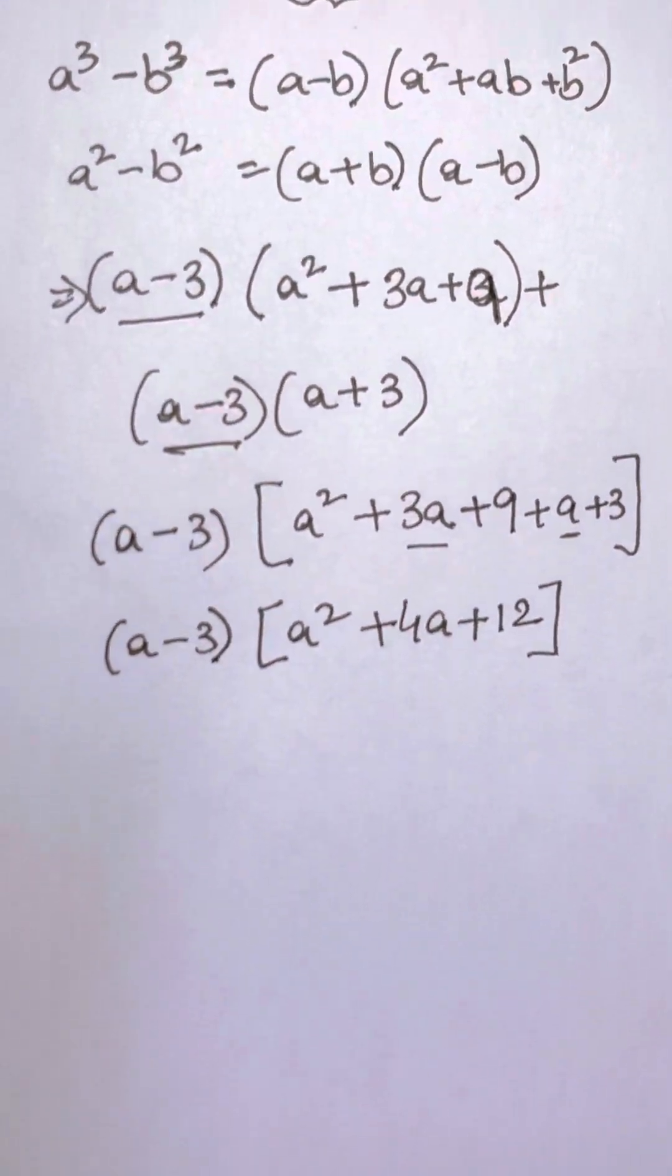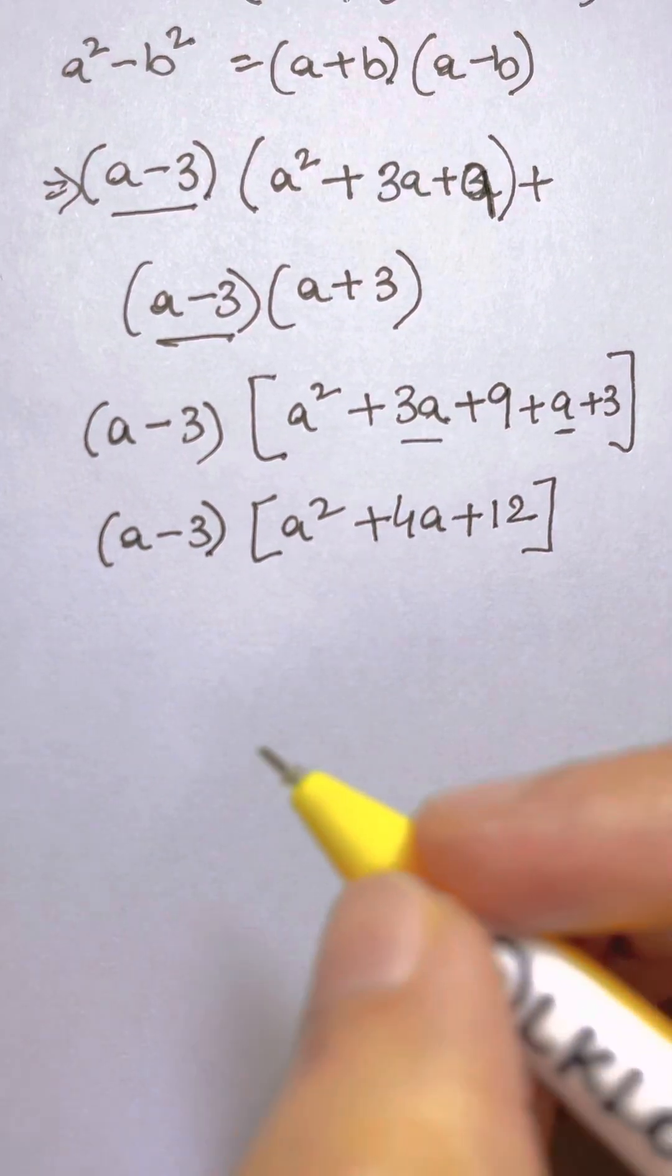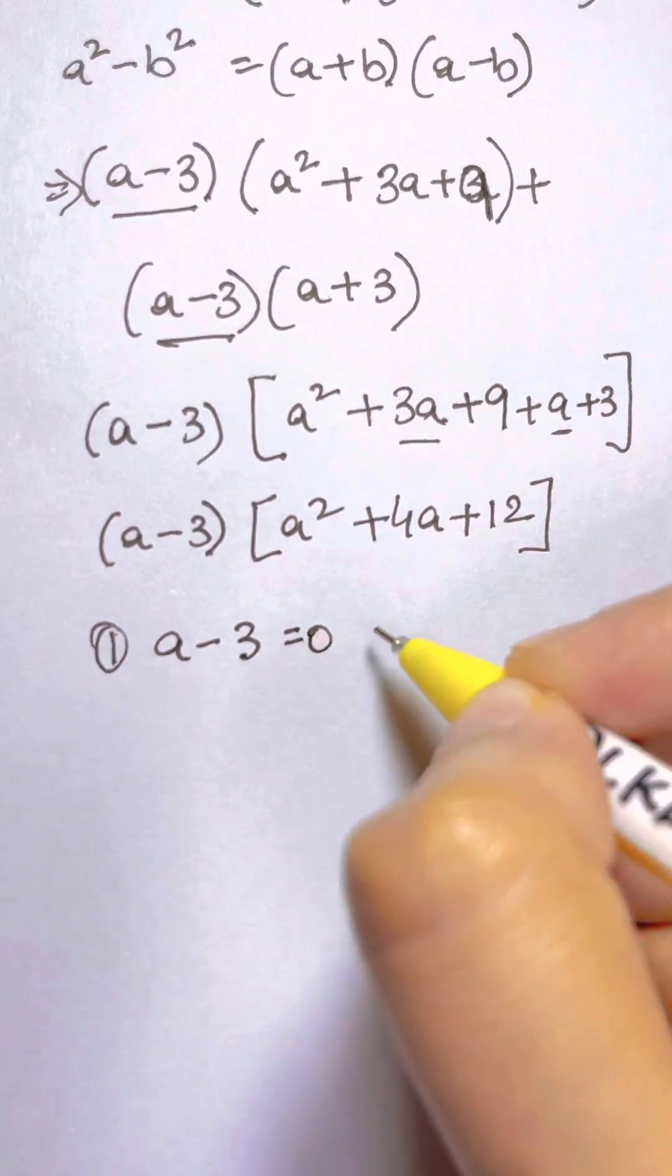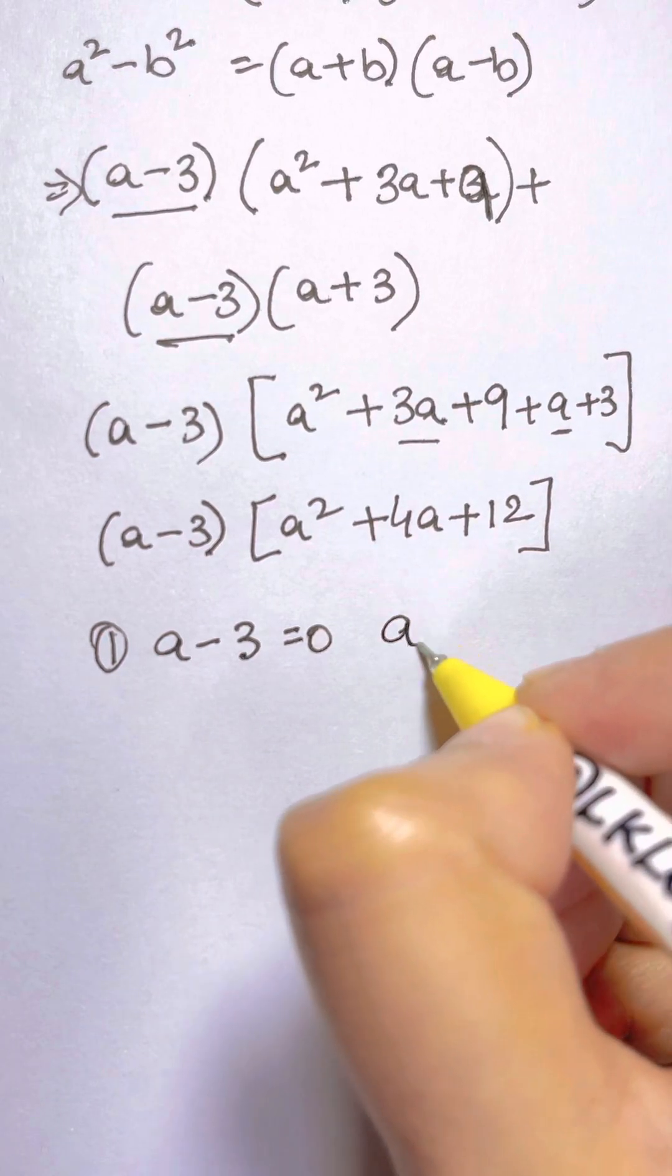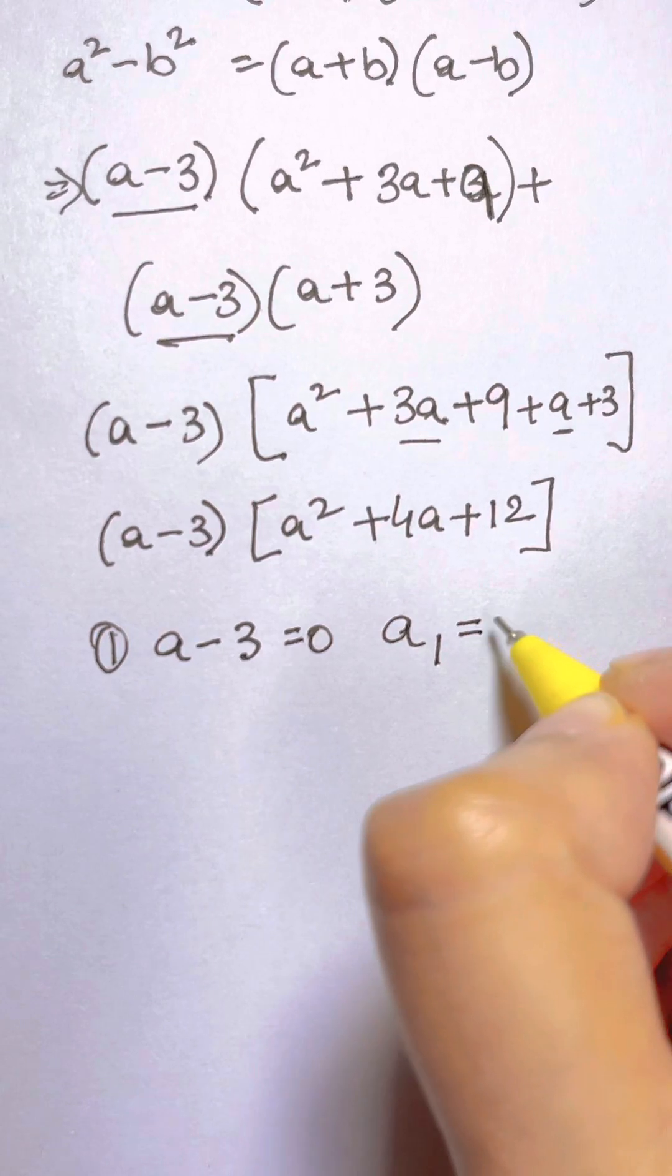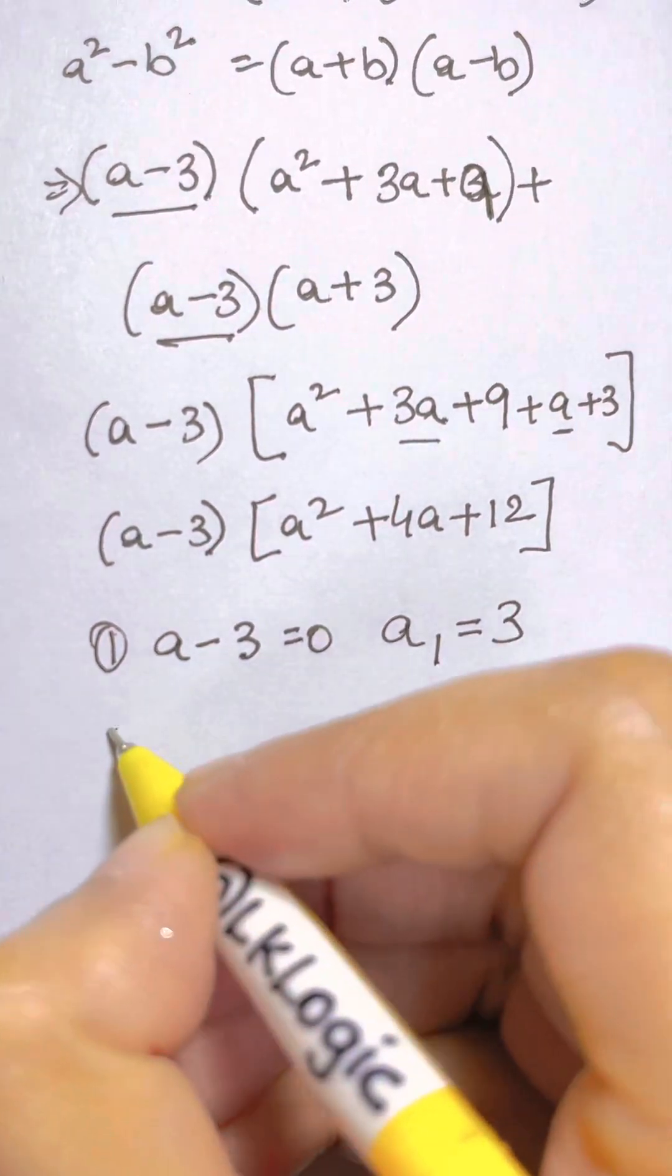Now what do I have? So there are two cases here. The first case is a - 3 = 0. So here I have the first solution, first root a₁ = 3. And the second root.